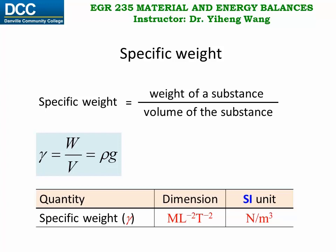We mentioned that density is an intrinsic property. Gamma, however, is no longer intrinsic — it is an extrinsic property. This is because it depends on g, the gravitational acceleration constant, which depends on different factors such as location or even the weather.